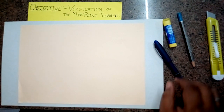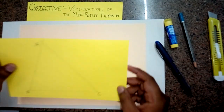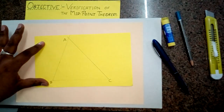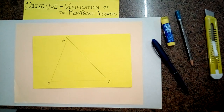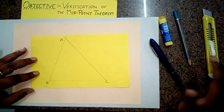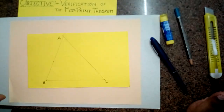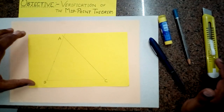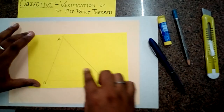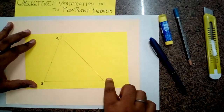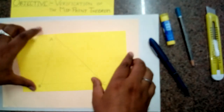Now the first step: draw a triangle — any type of triangle, whatever you want. I have taken a triangle and named it A, B and C. Now since we have to cut this one, cut the triangle ABC along its sides.